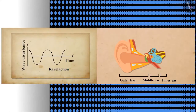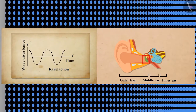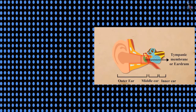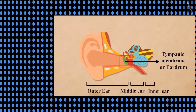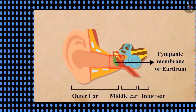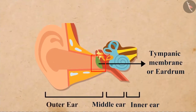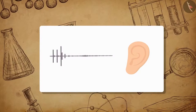Similarly, when a rarefaction of the medium reaches the eardrum, it forces the eardrum outward. In this way, vibrations are produced by the sound in the eardrum.